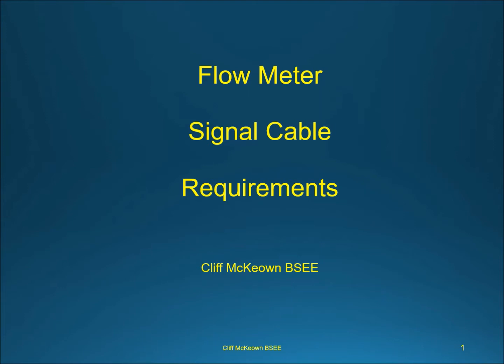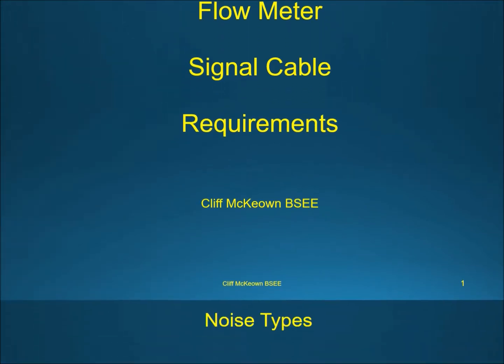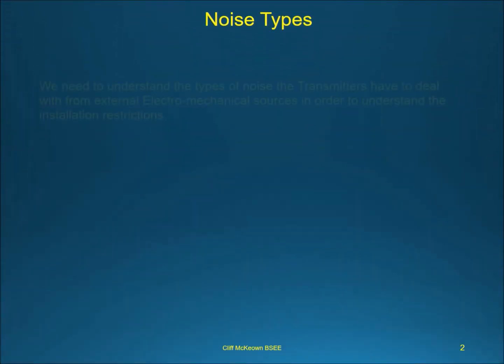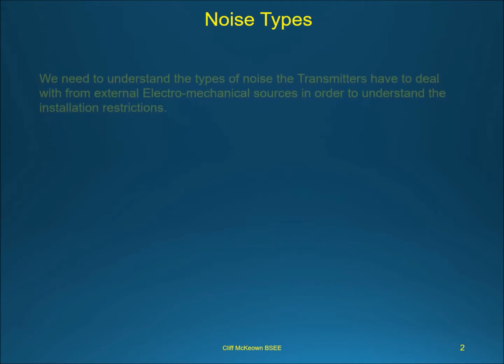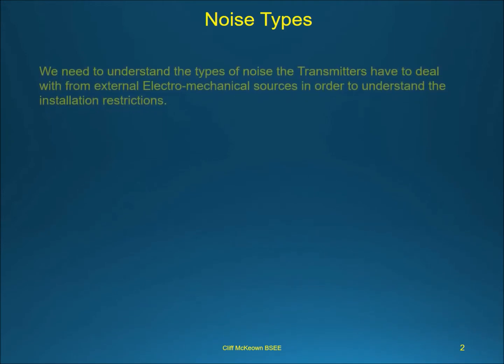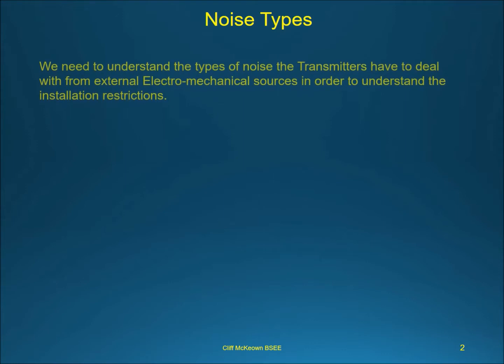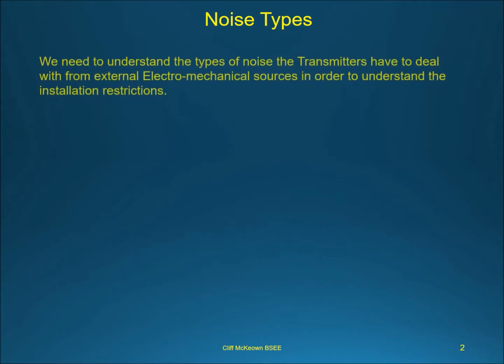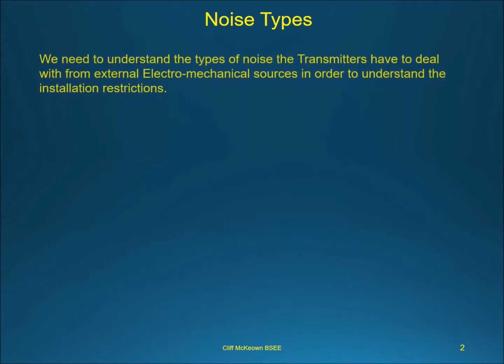It must be understood from the onset that noise can only be mitigated through careful shielding, routing, bonding, and grounding of the system. We need to understand the types of noise the transmitters have to deal with from external electromechanical sources in order to understand the installation restrictions.